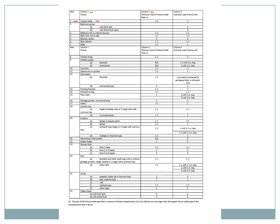Column number two is the minimum size of the fixture outlet pipe — it can't be any smaller than this. This is the one I use more often than anything. Unless you have specific instructions to upsize, you do not upsize. In this column, it's all in inches — so even though it only says one and a half, it means one and a half inch pipe size. It's important to remember that when you see the word 'size,' they're not talking about length or outside diameter — they're talking about nominal pipe size, which is approximately the inside diameter.